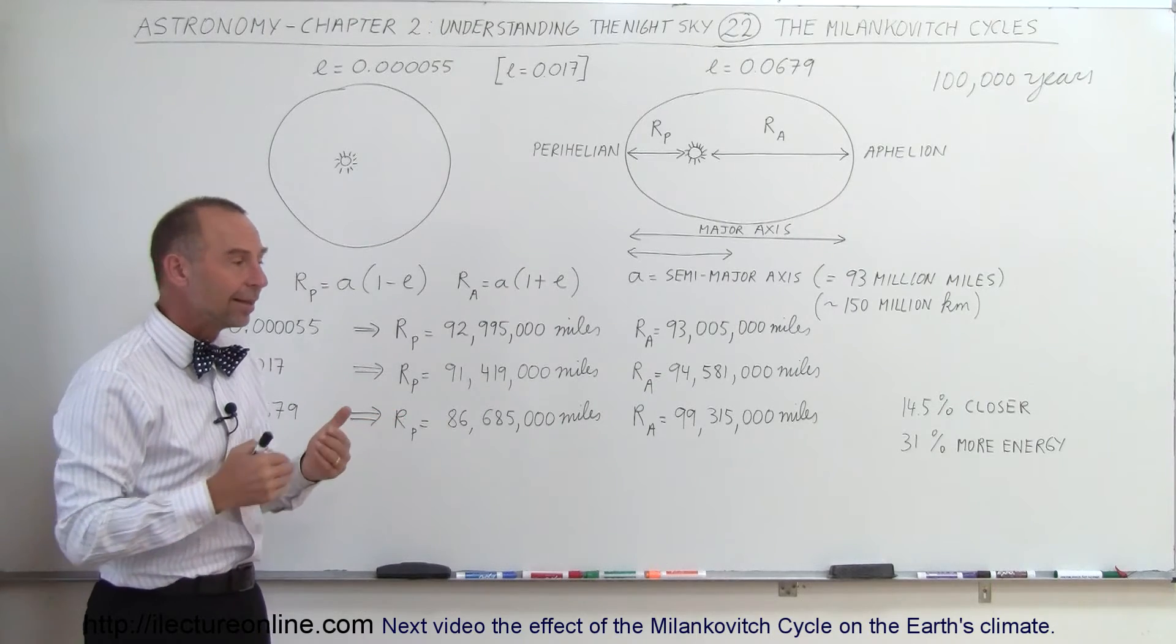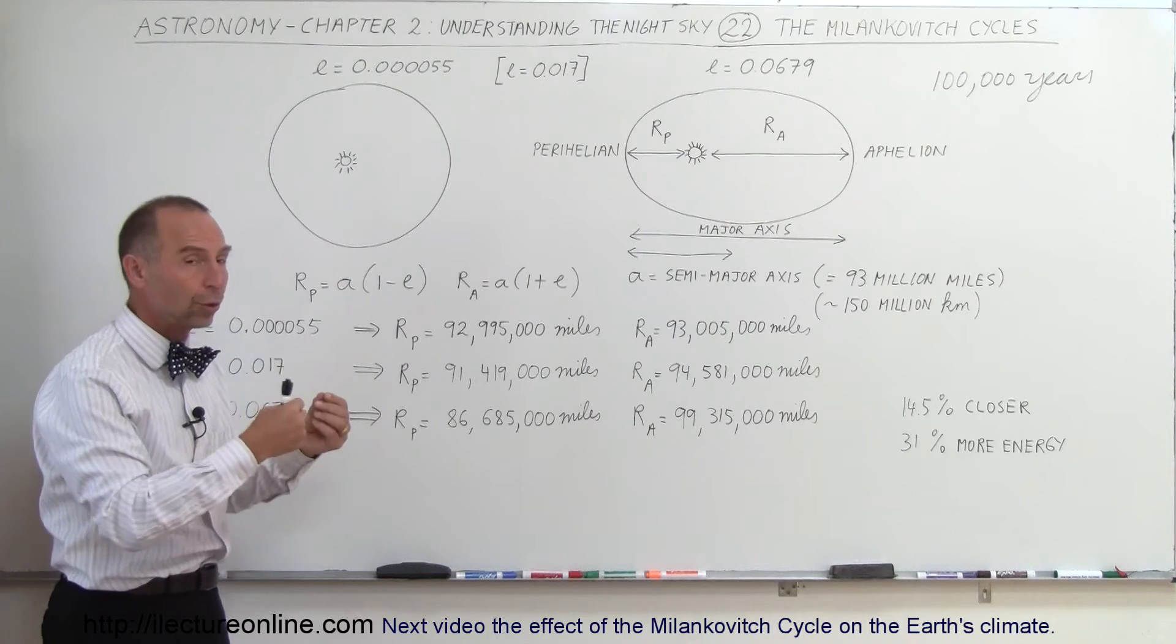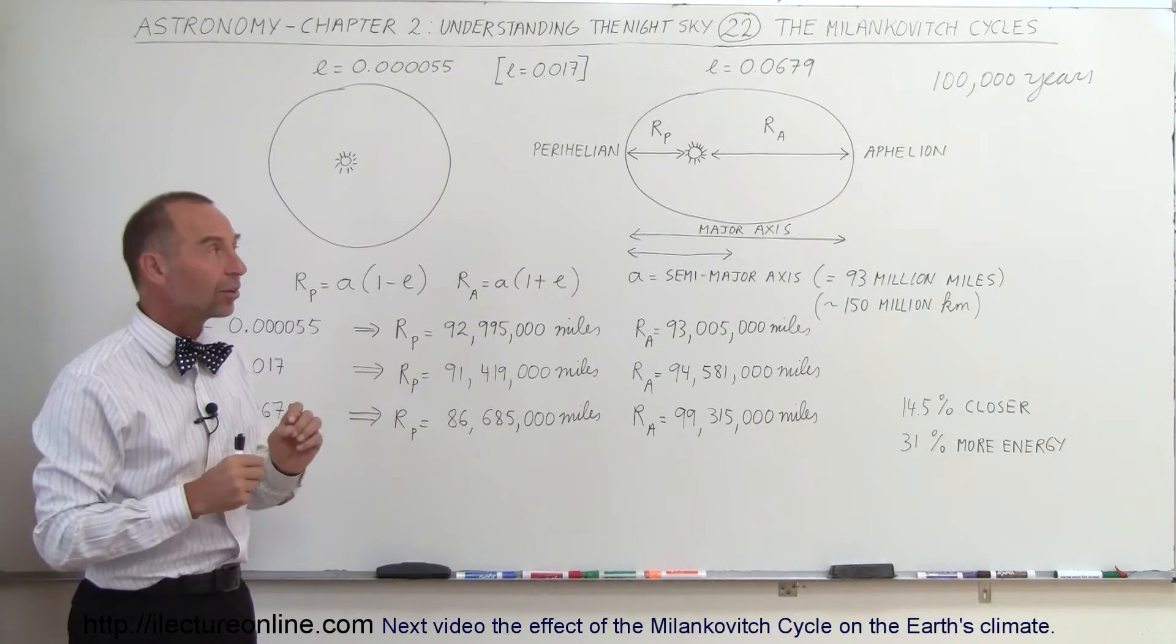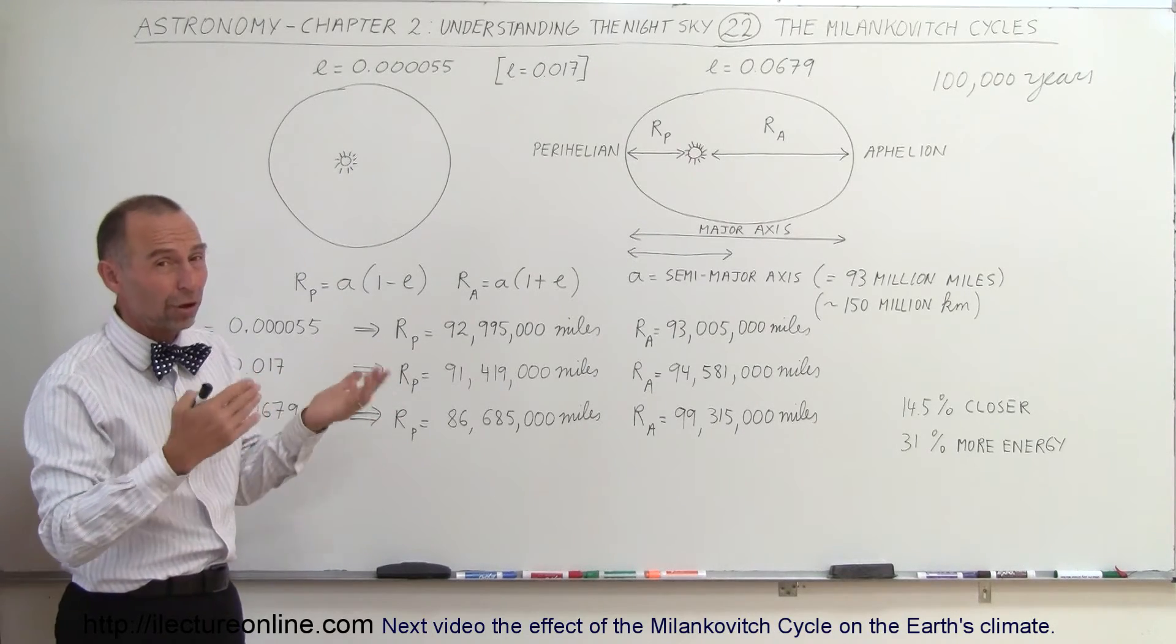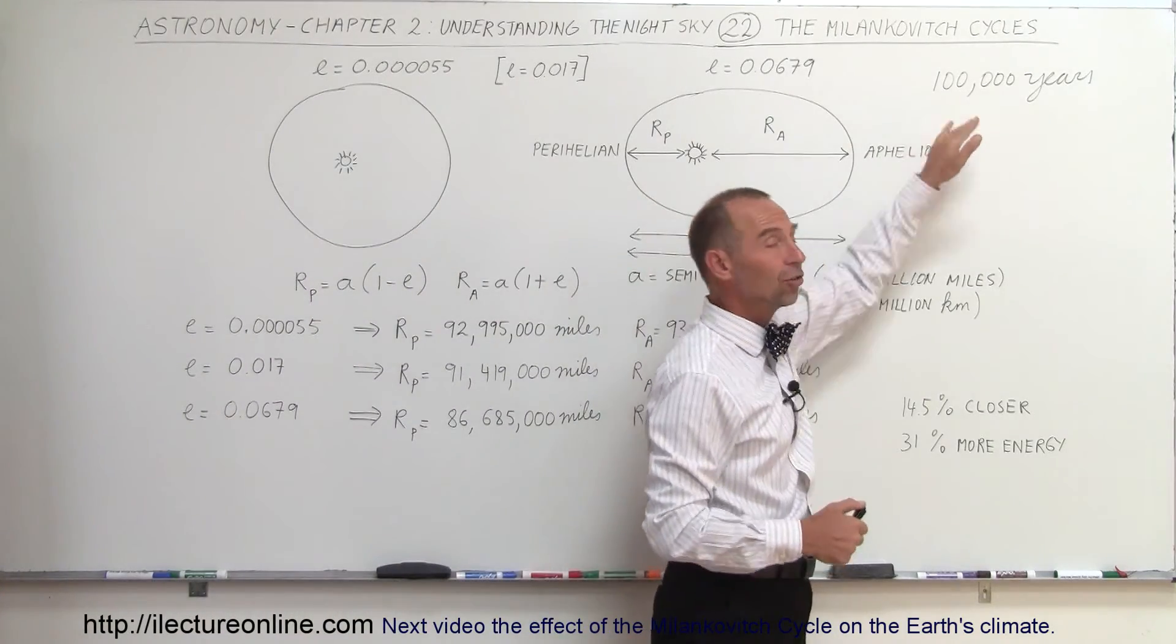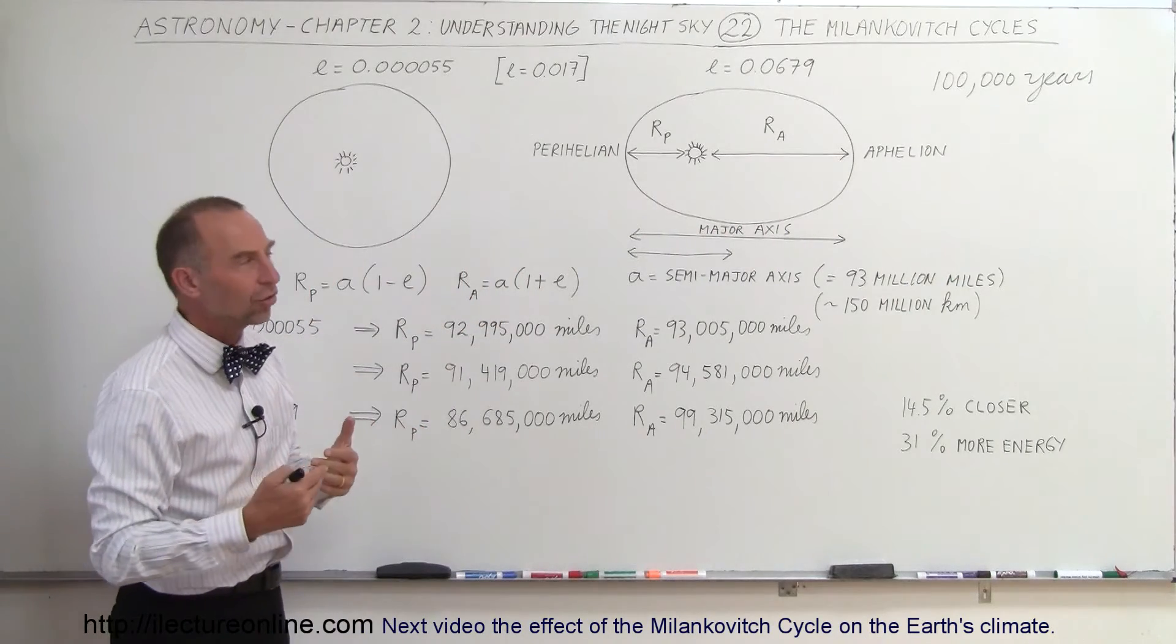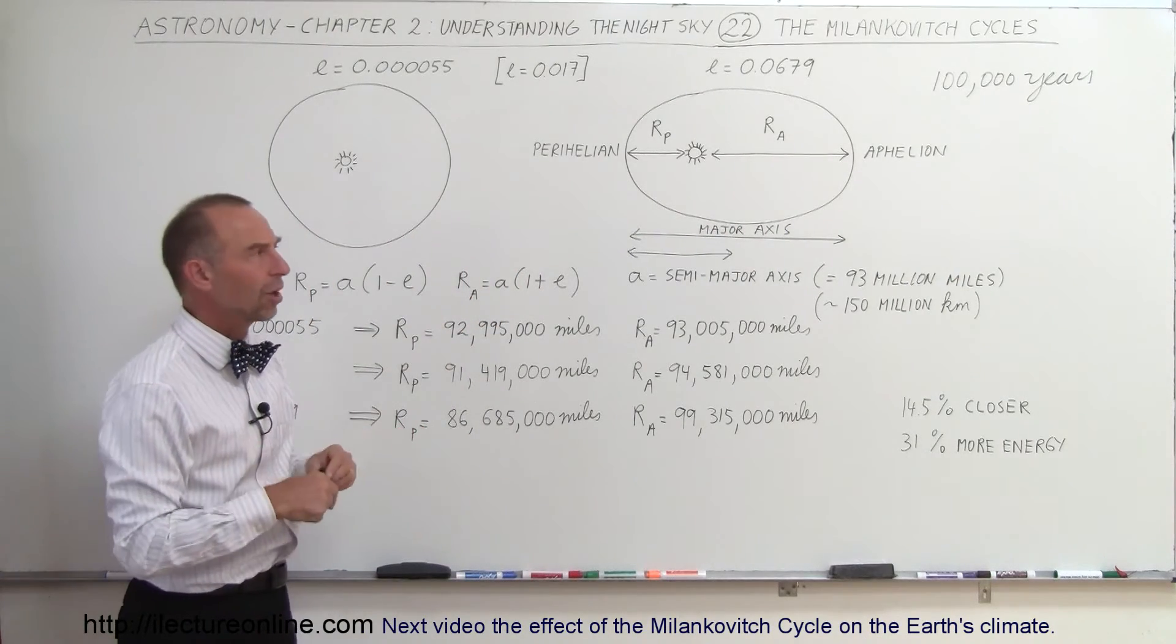Now, what's very interesting is that the ice ages, according to the geological record, also have been occurring at about 100,000-year cycles, and there's, of course, therefore a large suspicion that there's a very strong correlation between the Milankovitch cycles of the Earth's orbit around the sun and the ice ages. Very strong circumstantial evidence.